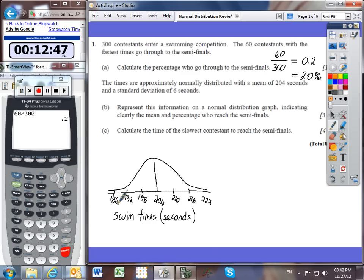It also wants us to indicate clearly the percentage who reach the semifinals. These are going to be the competitors who have the lower or faster times. Let's suppose that the bottom 20%, I'm estimating here, is about this much. These are the fastest 20% of the swimmers. And I'll just indicate that the area of that region is 20%, or 0.2 if you prefer.